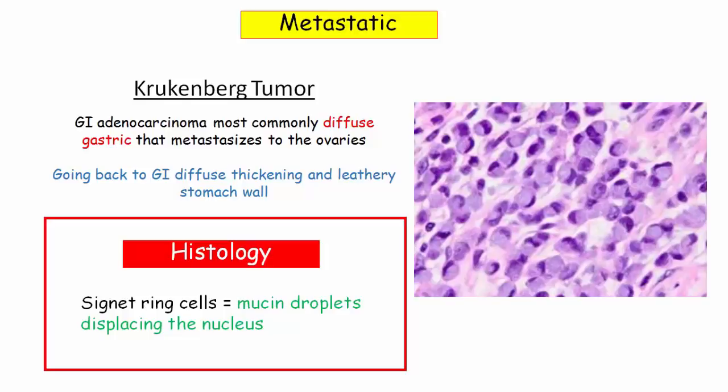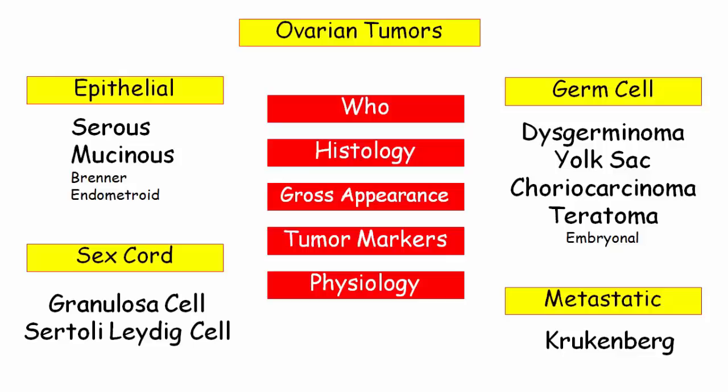Congratulations — you made it through all the ovarian tumors you'll need to know for Step 1. Our broad topics are epithelial tumors, germ cell tumors, sex cord tumors, and metastatic tumors. Go back and fill in the tumors under each topic with who gets them, their pathologic description, gross appearance, any tumor markers, and any important physiology, and you'll be able to get every question presented to you on Step 1. If you have any questions on ovarian tumors, feel free to contact 12daysinmarch.com, and good luck.